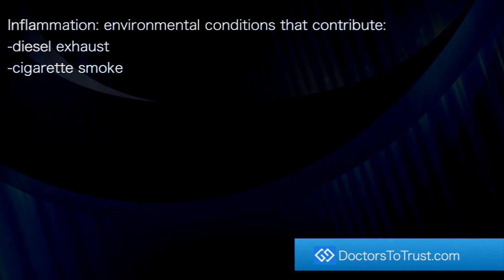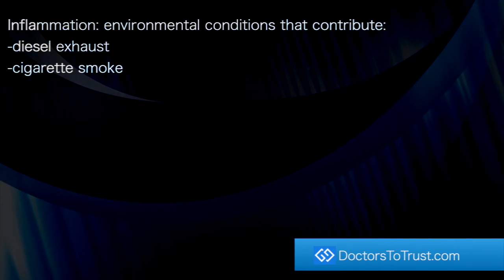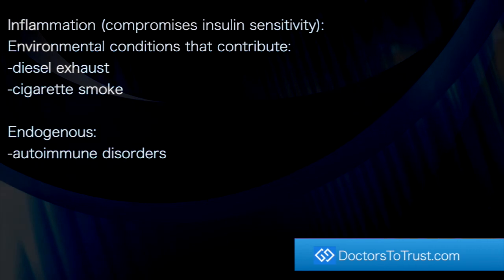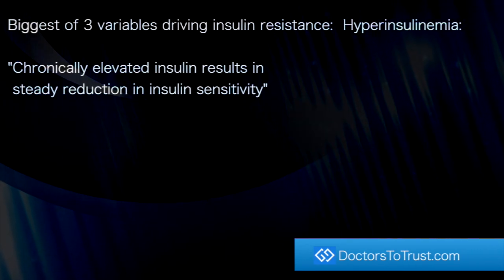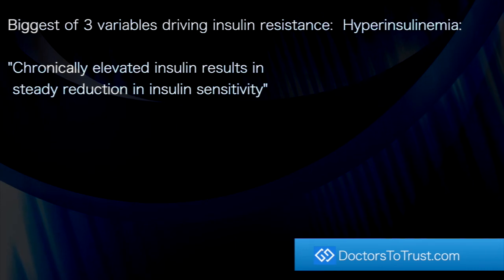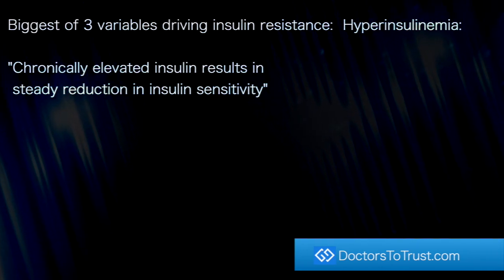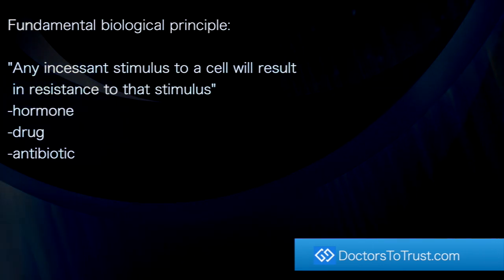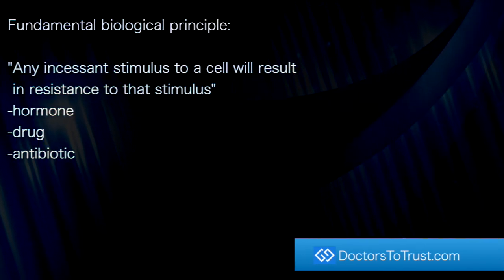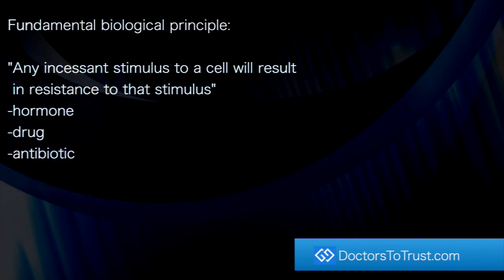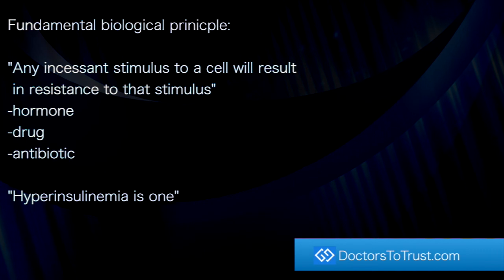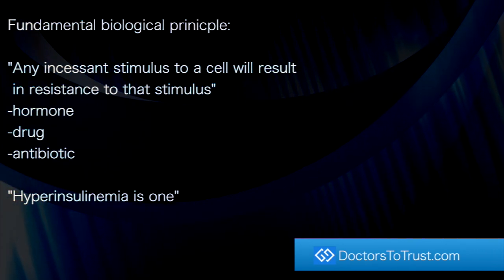Inflammation can be caused by environmental conditions — diesel exhaust, cigarette smoke — and by endogenous conditions such as autoimmune disorders. The biggest of the three variables driving insulin resistance is hyperinsulinemia. Dr. Bickman says chronically elevated insulin results in a steady reduction in insulin sensitivity. He believes this is a fundamental biological principle: any incessant stimulus to a cell will result in resistance to that stimulus. It could be a hormone, a drug, or an antibiotic — and it could be hyperinsulinemia.